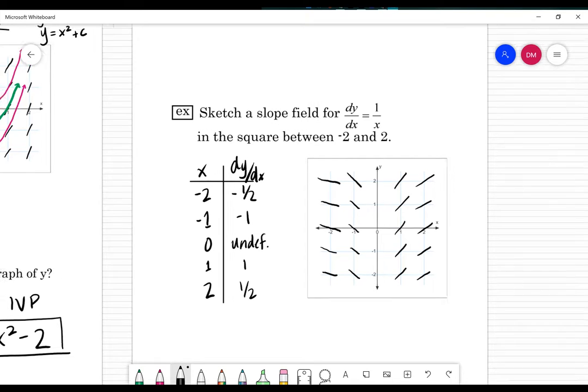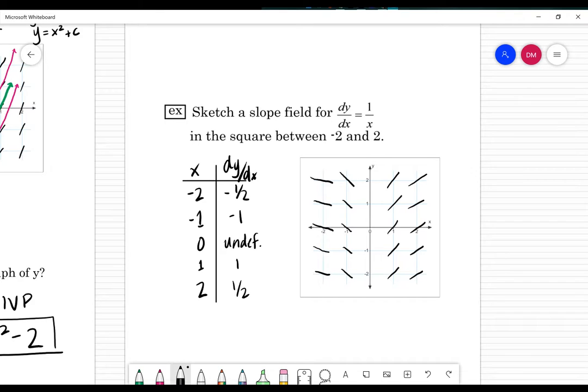If we want to make sure that this accurately represents the family of solutions, we can easily find the solution for this. y prime equals one over x, we just integrate it and we get y is equal to the natural log of x, but we should specify that we are taking the absolute value of x. We do that absolute value around it because we can't take the natural log of negative numbers. If you were to plug this in, you probably would see those in your slope field, but they wouldn't work graphically unless we specify absolute value.